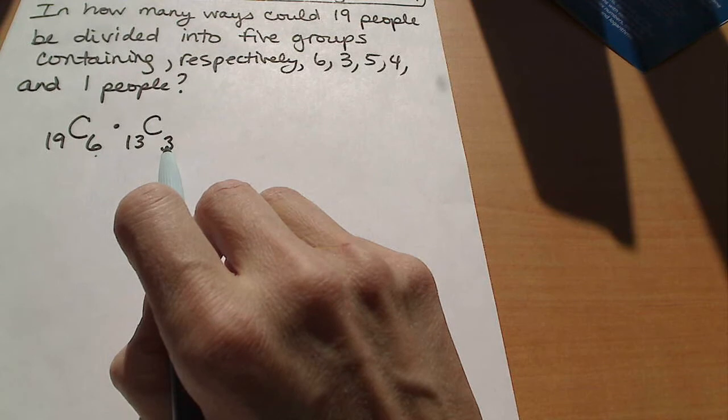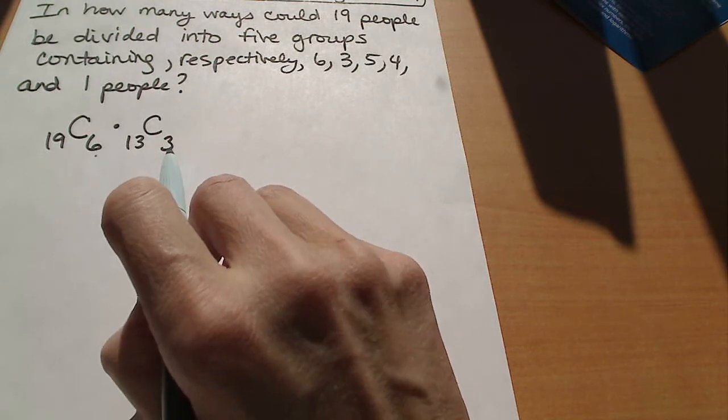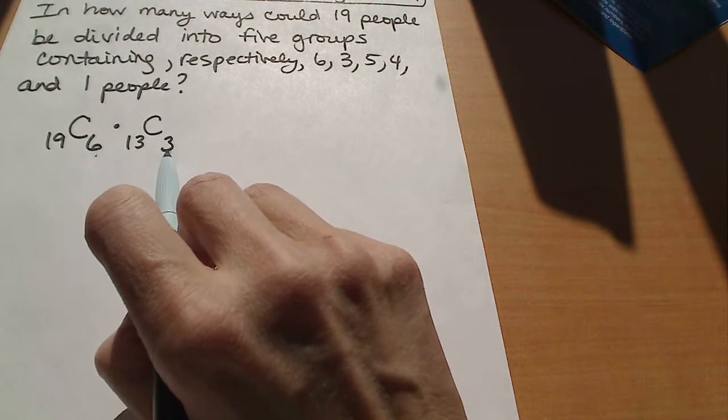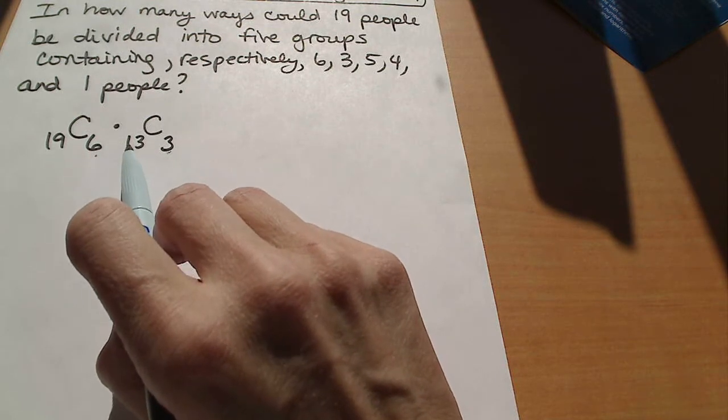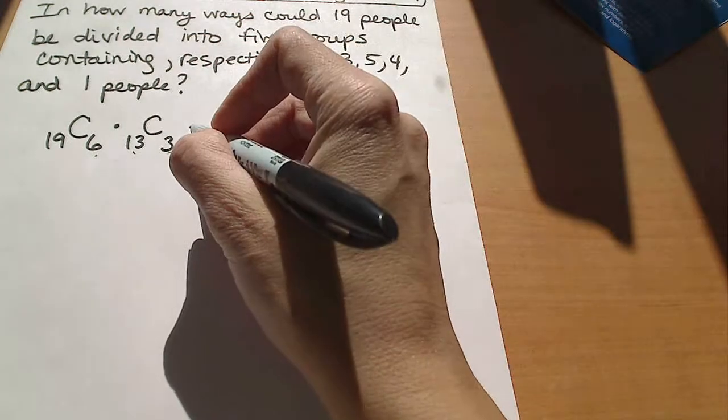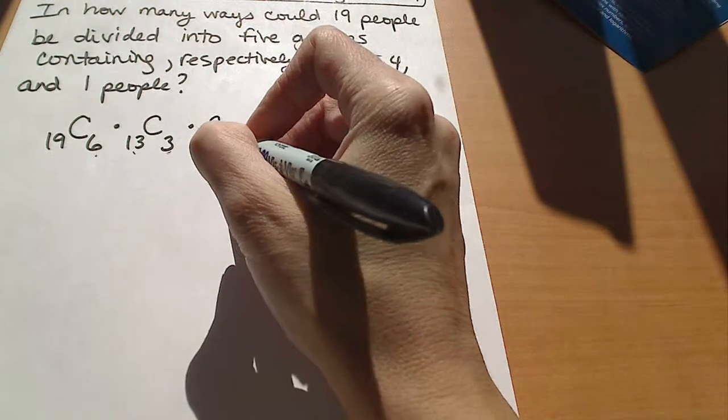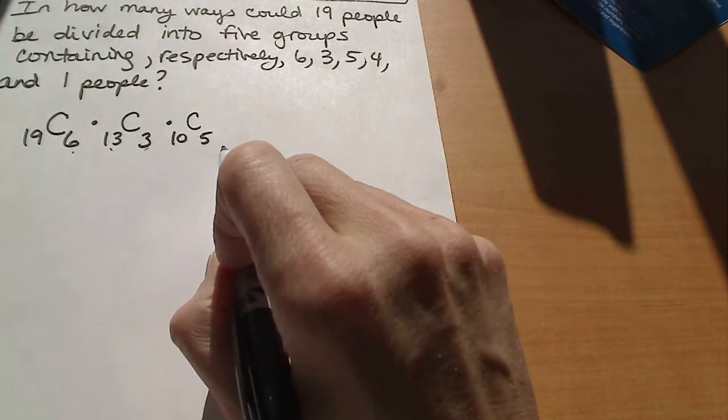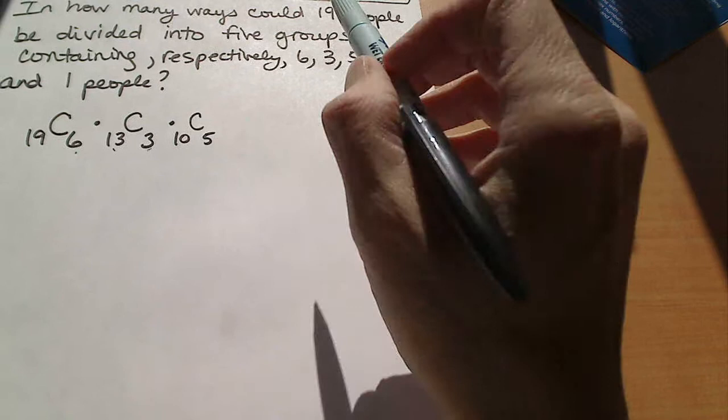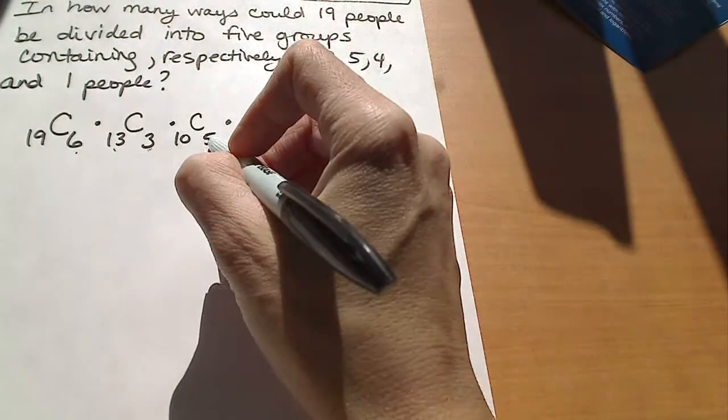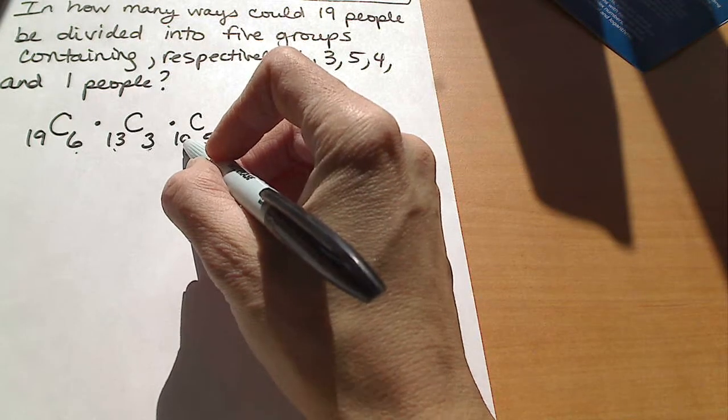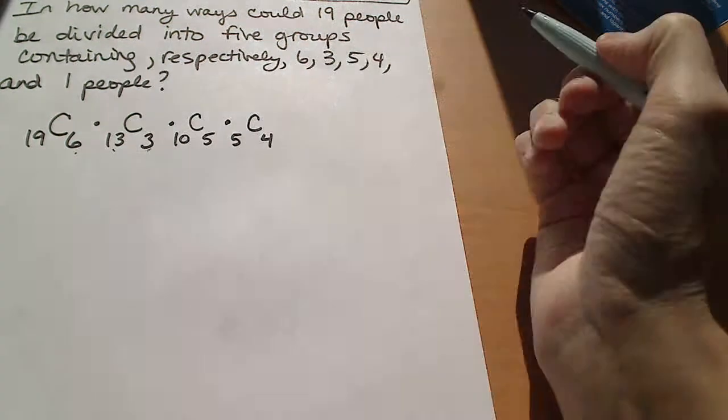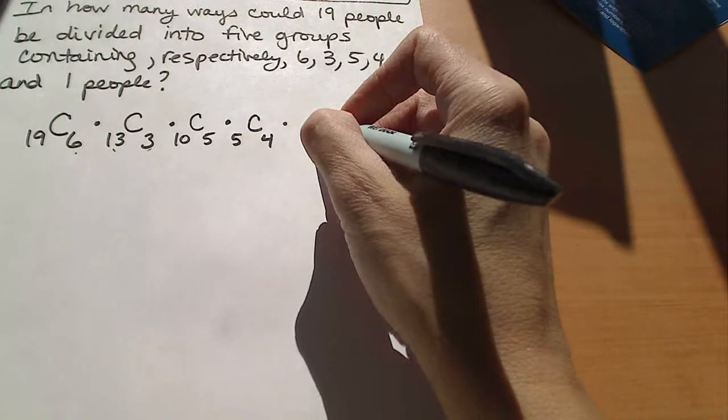So we've now placed 9 people. And you actually don't have to go back to this. You can just start here. So we've placed 3 more out of the 13, so there's now 10 left over. And I'm trying to choose a group of 5 next. So that would be a combination of 10 taken 5. And then we want to choose a group of 4. So we've placed 5 from the 10, so there's 5 left over. So a combination of 5, and we're choosing 4. And then there's just one person at the end.